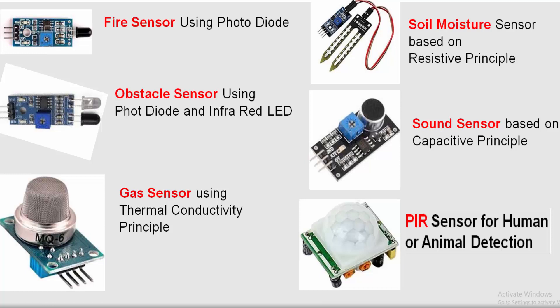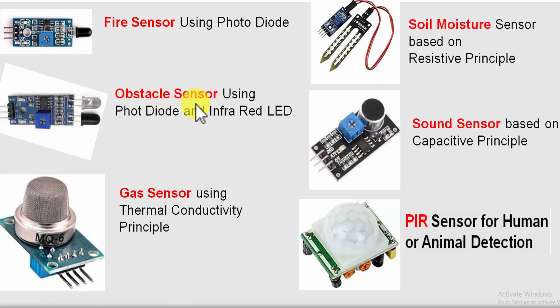Here are some examples of transducer modules, or sensor modules. This is a fire sensor which will convert fire — that is a physical phenomena — into an electrical signal. It is basically a photodiode which measures the wavelength of the fire. Next is the obstacle sensor. In this there are two LEDs — one is a transmitter and another is a receiver. One will transmit the infrared light, and if it is obstructed by an obstacle it can be received by the receiver, and it will sense the obstacle.